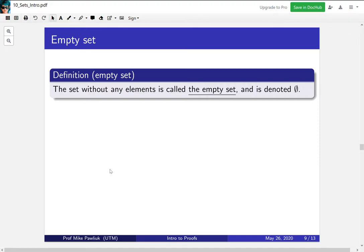This leads us to an important definition: the empty set. The empty set is the set without any elements. We denote it by this symbol with a bar through it.